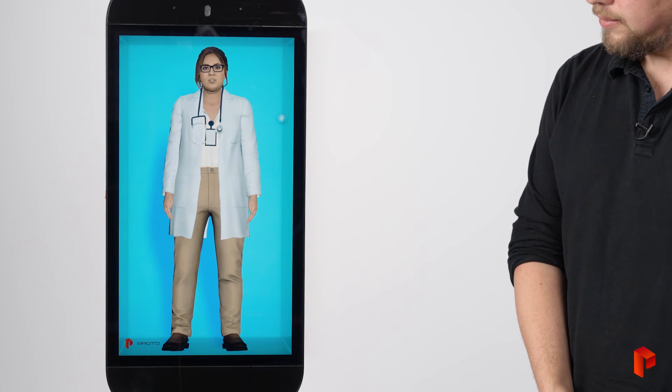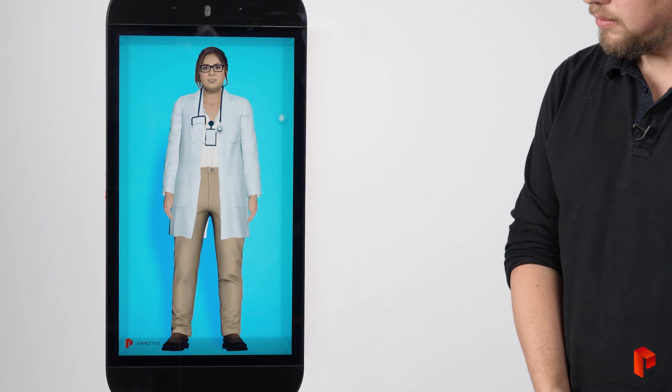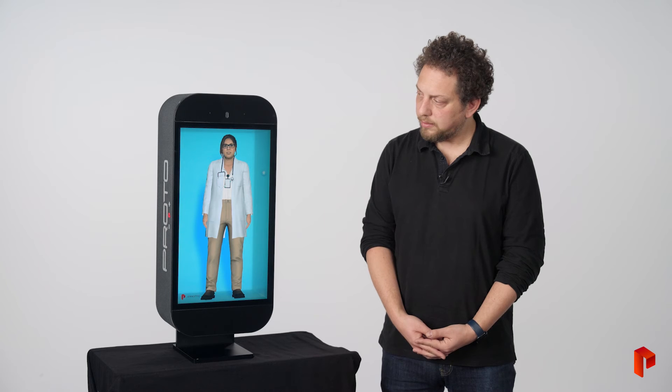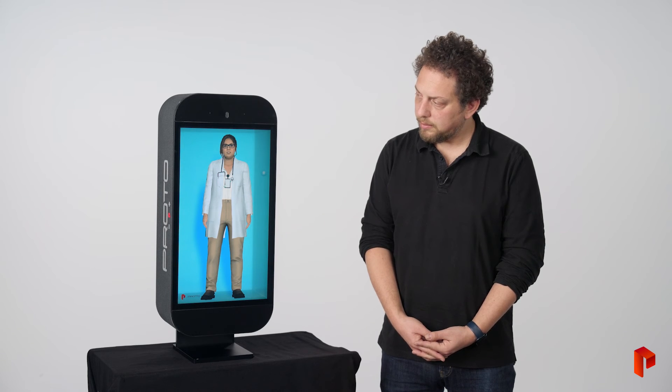Treatment options for a torn ligament or tendon may include rest, ice, compression, elevation (RICE method), physical therapy, immobilization with a brace or cast, and in severe cases, surgery may be necessary.